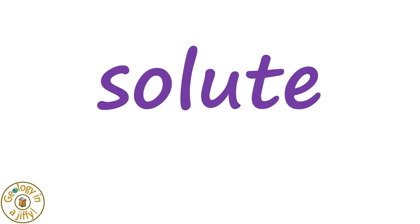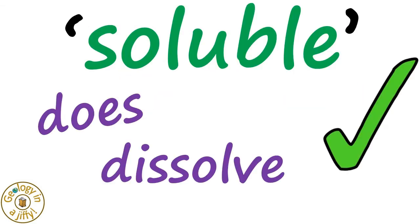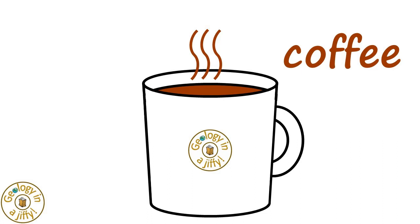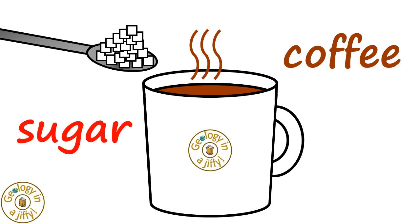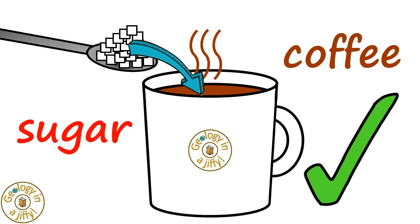A solute is said to be soluble if it does dissolve in a solvent. For example, if we have the solvent of a black coffee drink, when we add sugar to our coffee, the sugar does dissolve, so the sugar is soluble in a coffee drink.